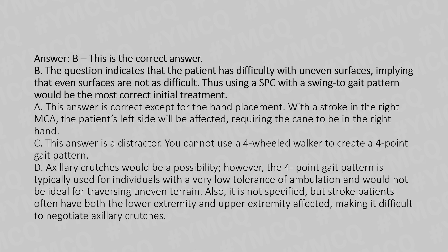Option C is a distractor — you cannot use a four-wheeled walker to create a four-point gait pattern. Option D: axillary crutches would be possible; however, the four-point gait pattern is typically used for patients with very low tolerance of ambulation and would not be ideal for traversing uneven terrain. Also, stroke patients often have both lower and upper extremity affected, making it difficult to negotiate axillary crutches.